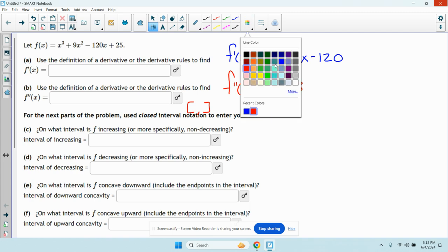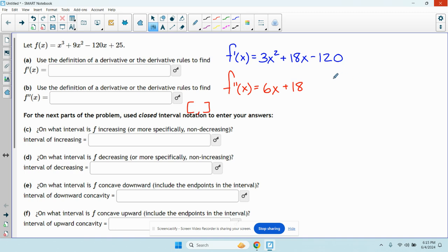Let's pick a different color. So if I set this thing equal to zero, I'm going to start by factoring out a 3. So I have 3 times the quantity x squared plus 6x minus 40 equals zero.